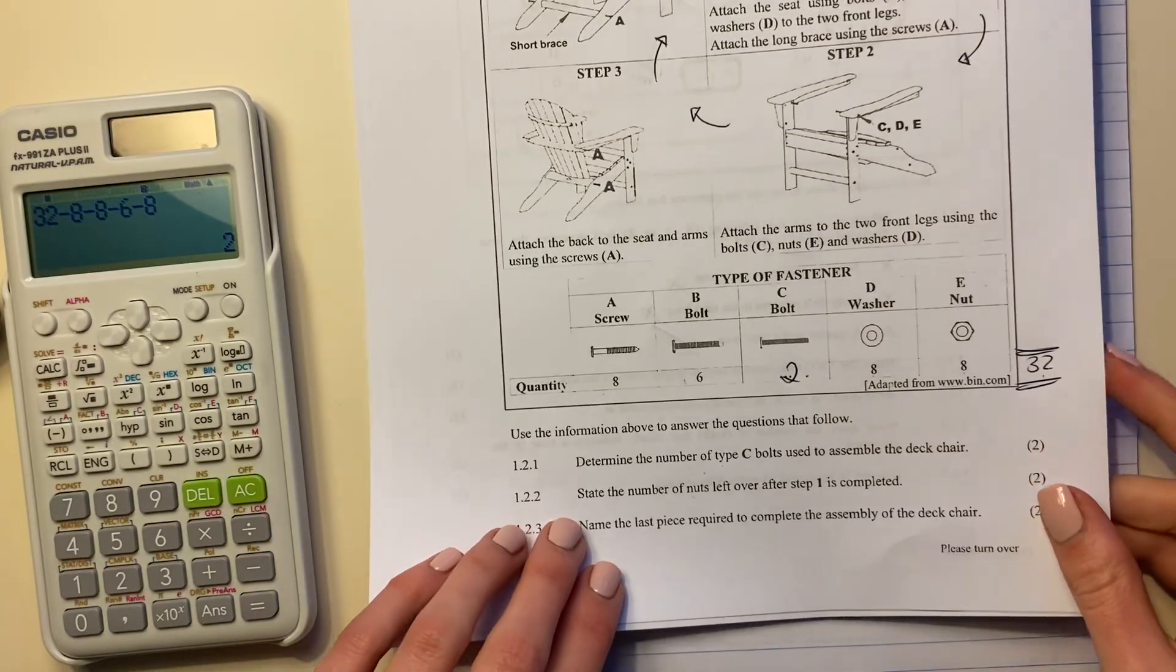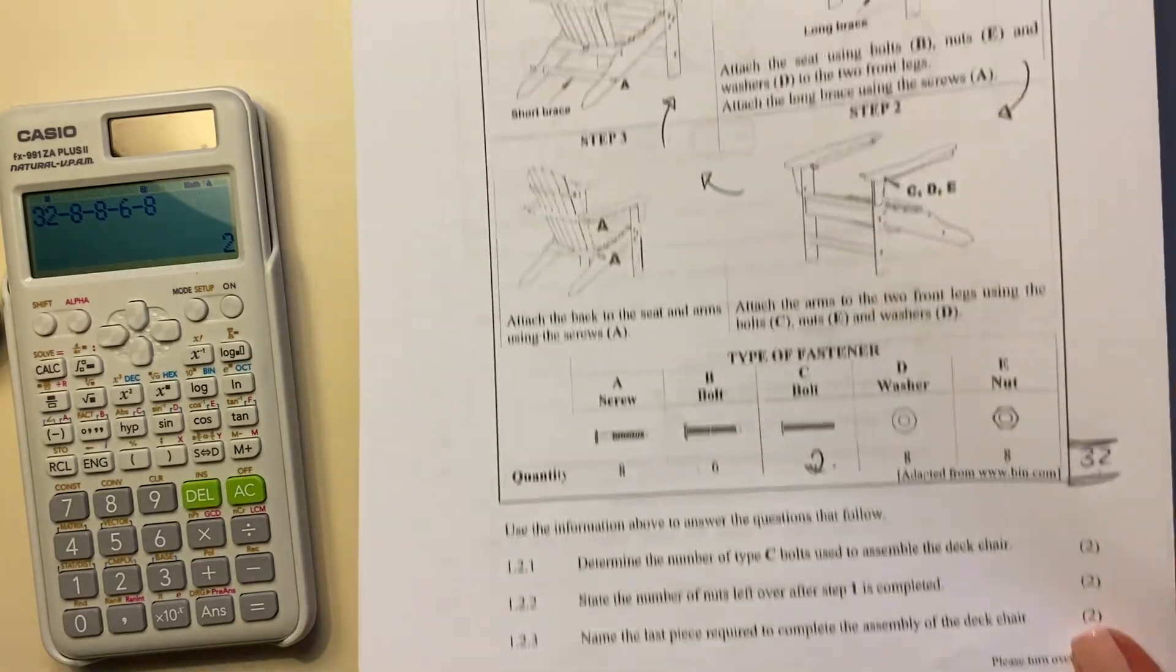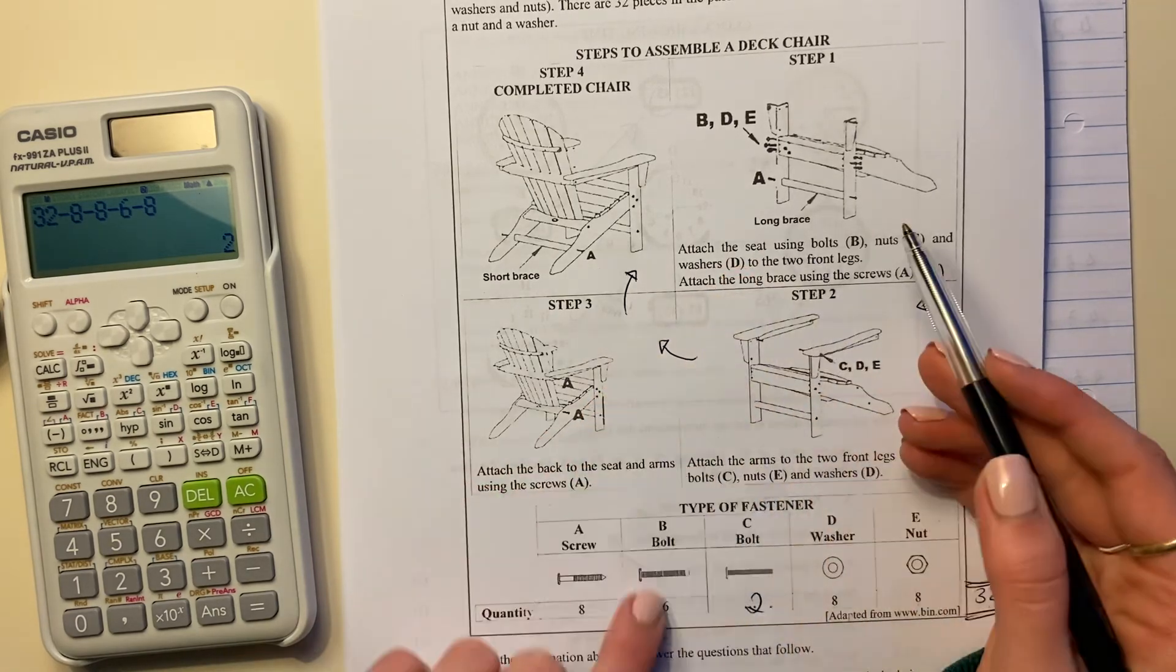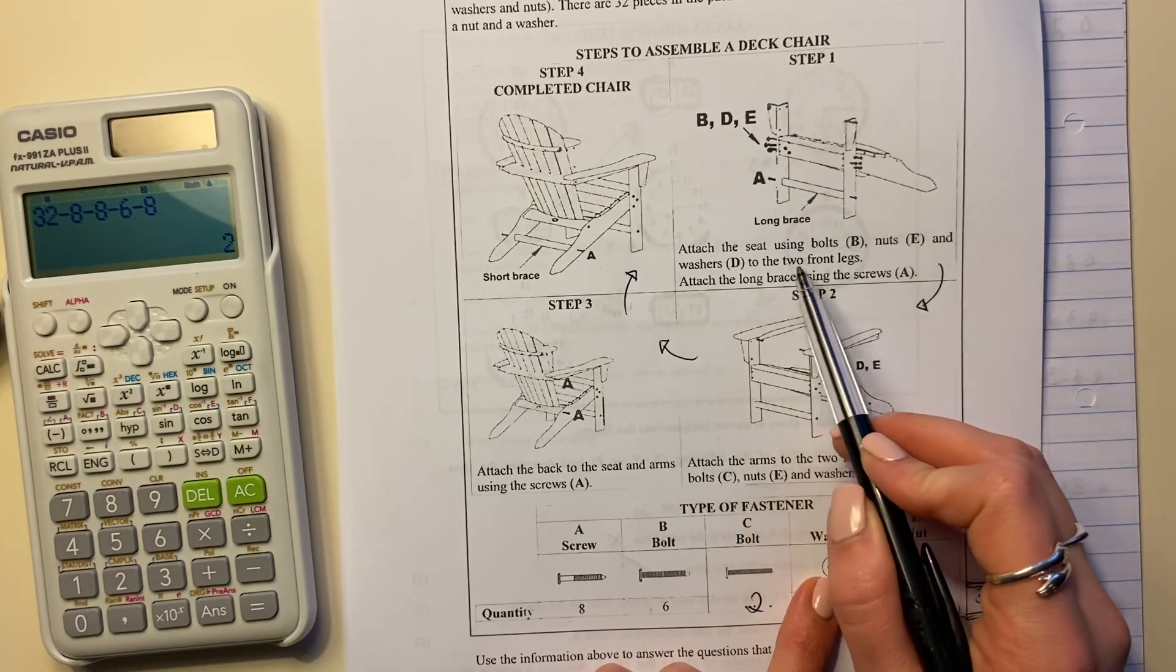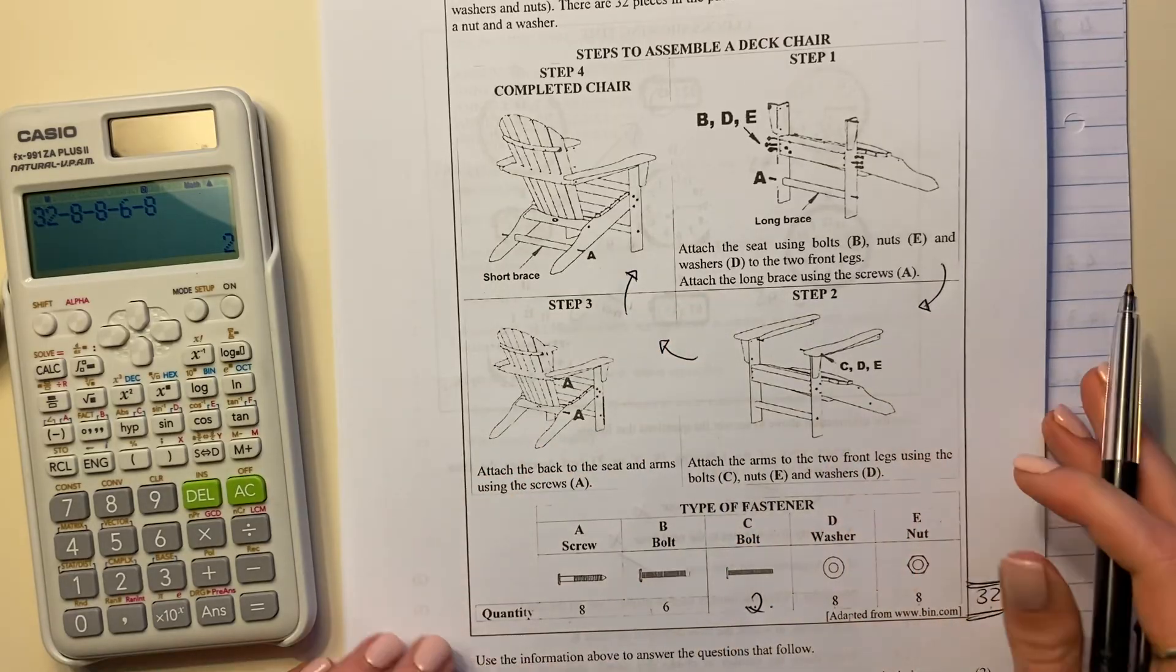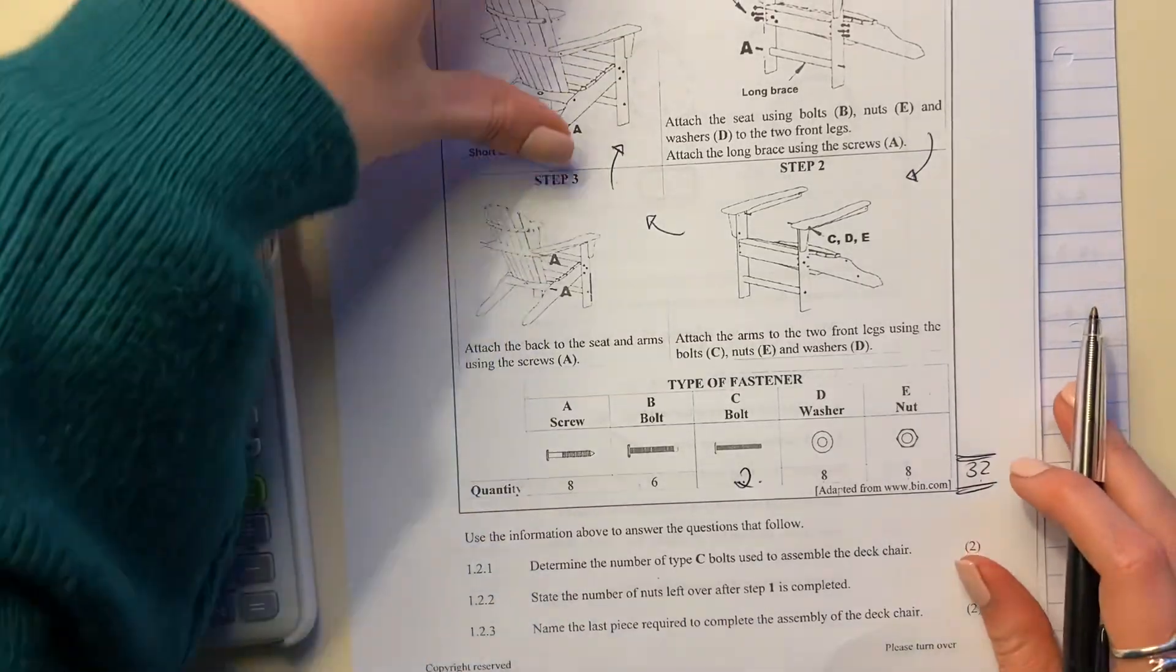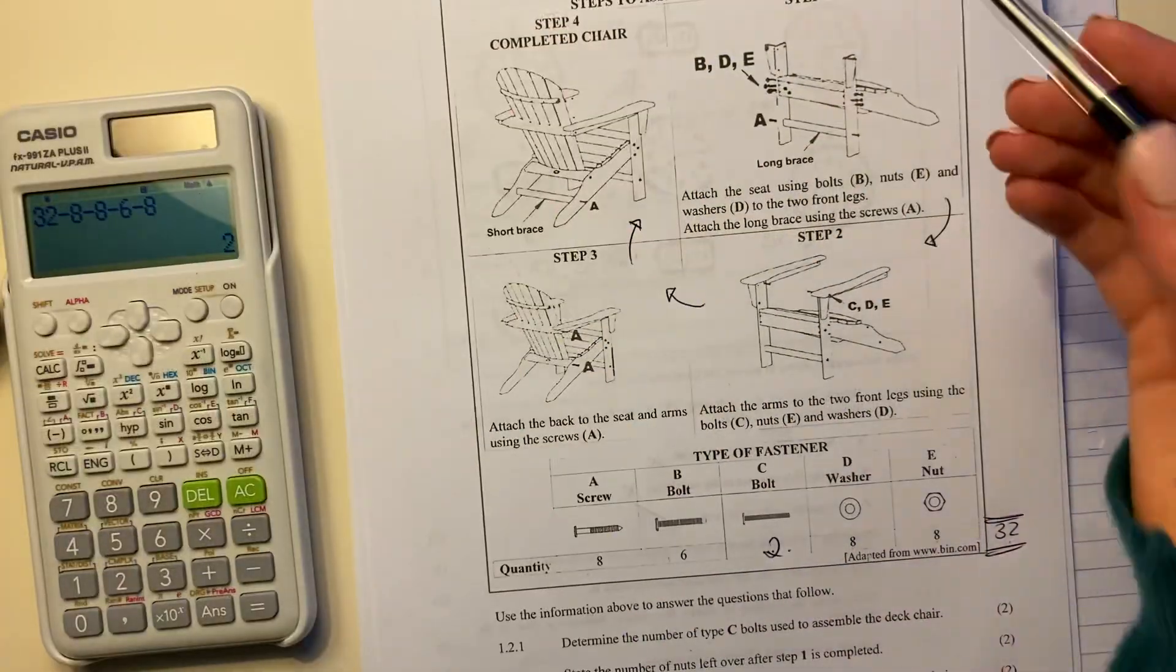Then it says state the number of nuts left over after step one is completed. Okay, so here it says attach the seat using bolts B, nuts E and washers D to the two front legs. Attach the long brace using the screws A. So it says state the number of nuts left over after step one is completed. So if we look here, for each of these.